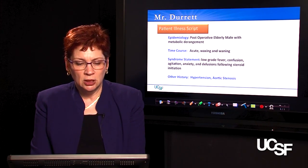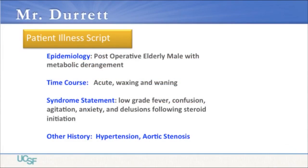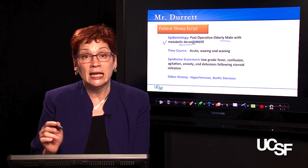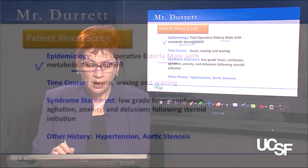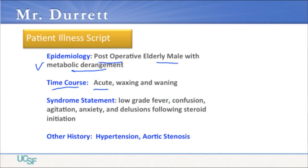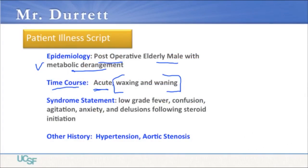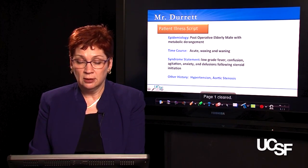Here's Mr. Durrett's illness script for this component of his hospitalization. Epidemiology: this is a post-operative elderly male with a metabolic derangement — we put metabolic derangement in epidemiology because we think it might be linked, and it's a new problem. The time course of his current presentation is acute — he was fine yesterday — and it's been waxing and waning: he was stuporous, then paranoid, then agitated. The syndrome statement includes low-grade fever, confusion, agitation, anxiety, and delusions following steroid initiation, along with his known history of hypertension and aortic stenosis.